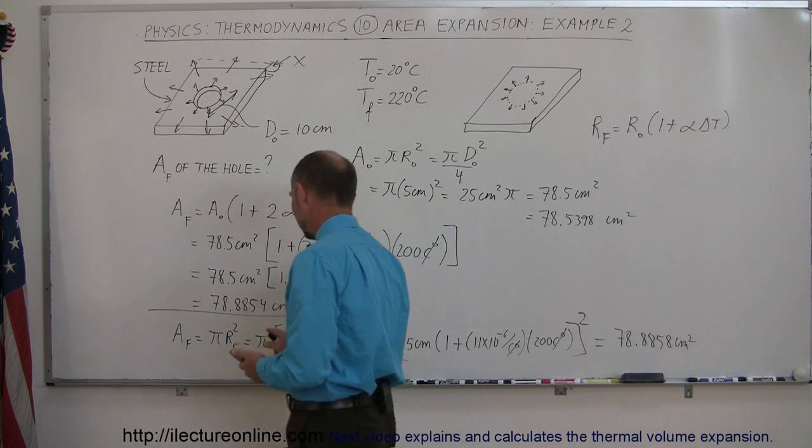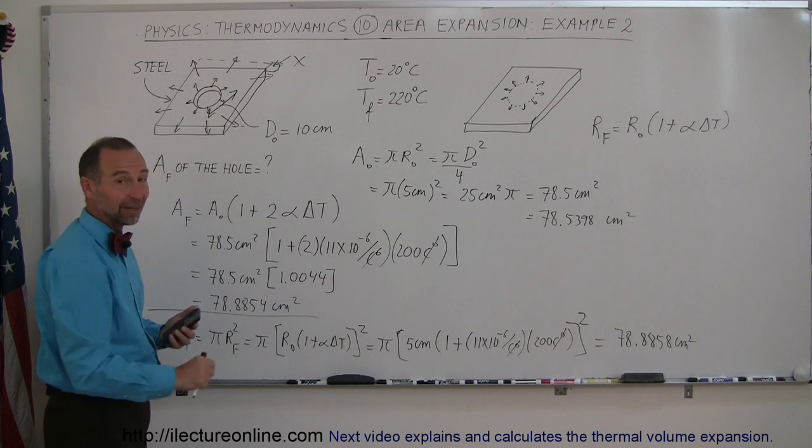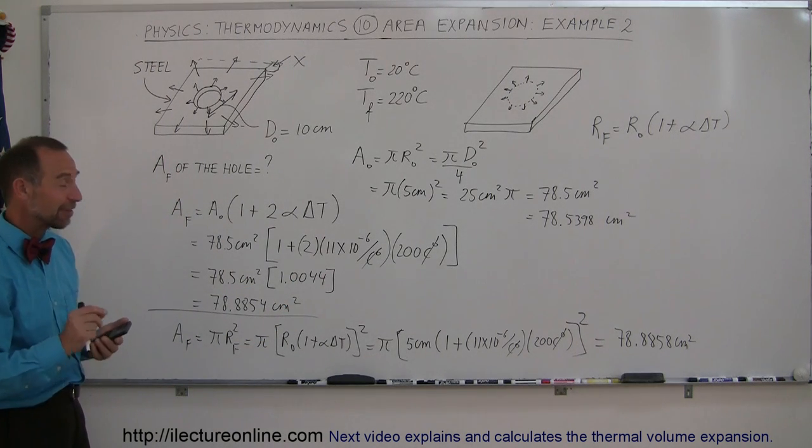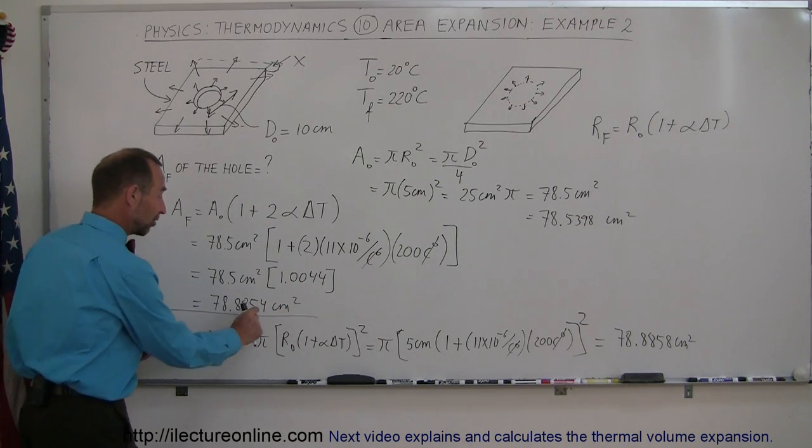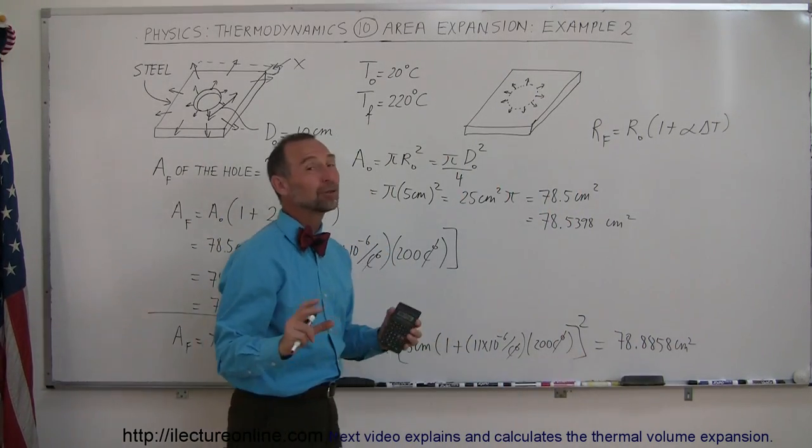Now let's compare that to our answer right here. Notice here we got 78.8854, and there we got 78.8858. So you can see that there's a slight difference in the fourth decimal place. It's a very minute amount.